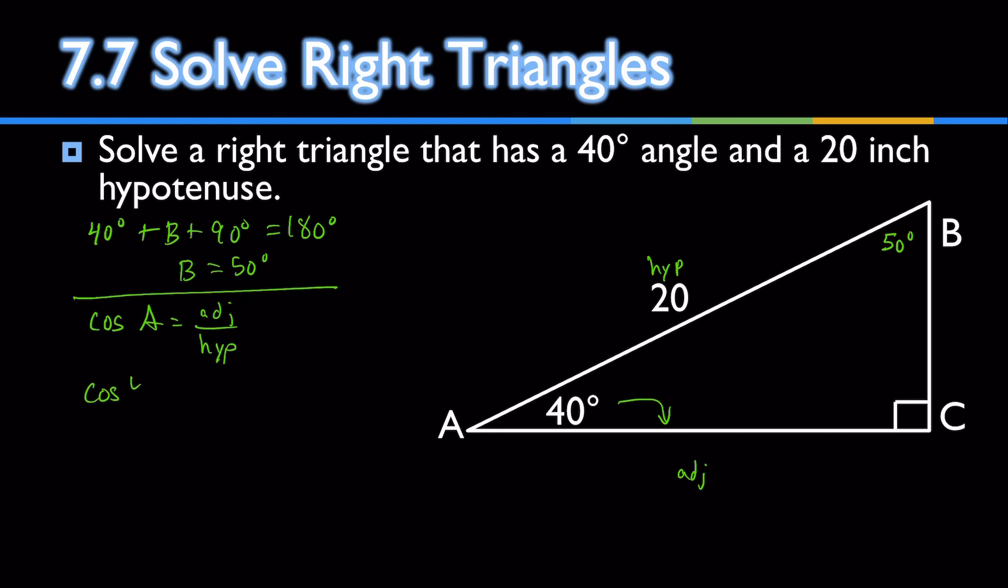I can say cosine of 40 degrees is the adjacent, AC, over the hypotenuse, 20. Put it over 1 and cross multiply. AC is 20 times cosine of 40 degrees. Put that in the calculator, and AC is about 15.3.